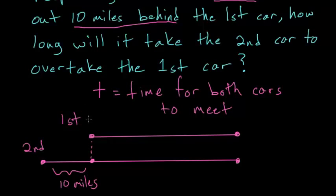Since we know that the first car is going 30 miles an hour, the second car is going 50 miles per hour.